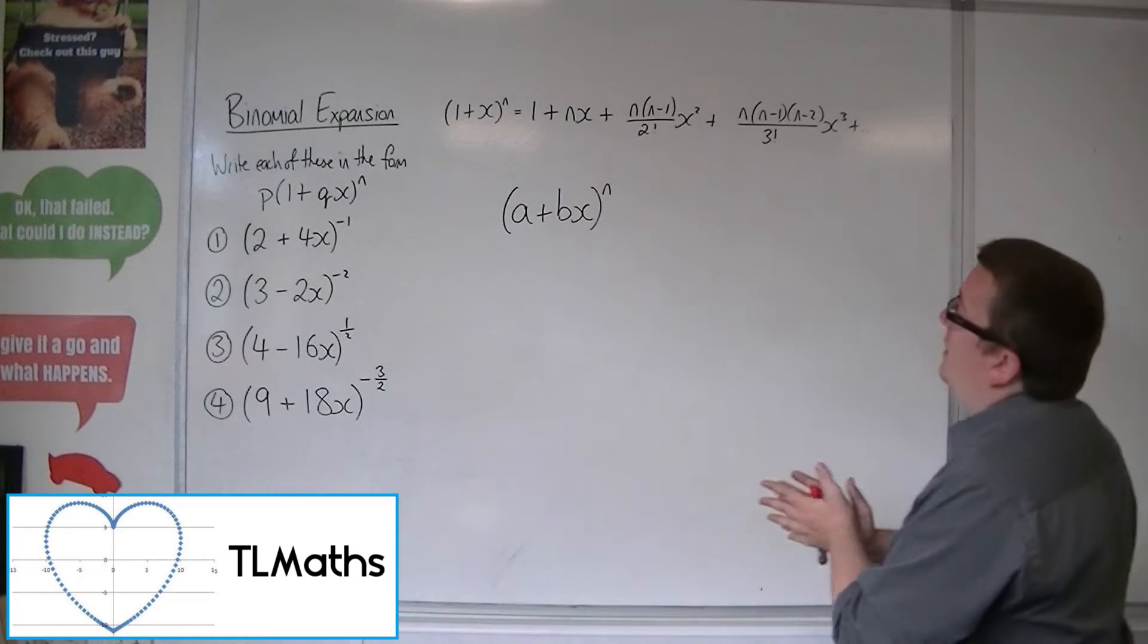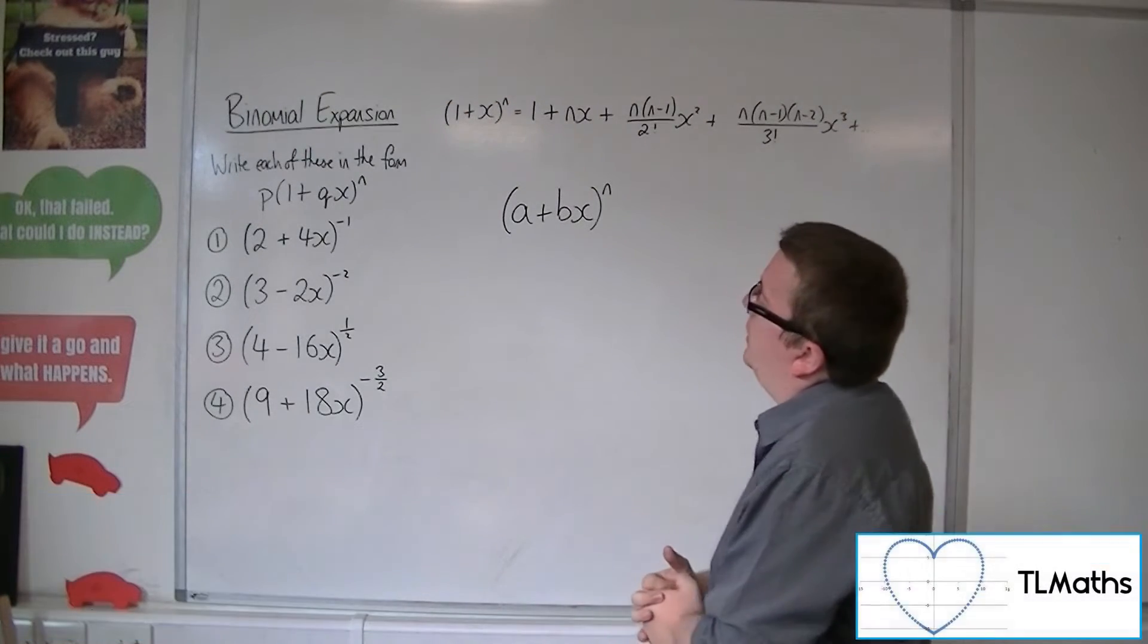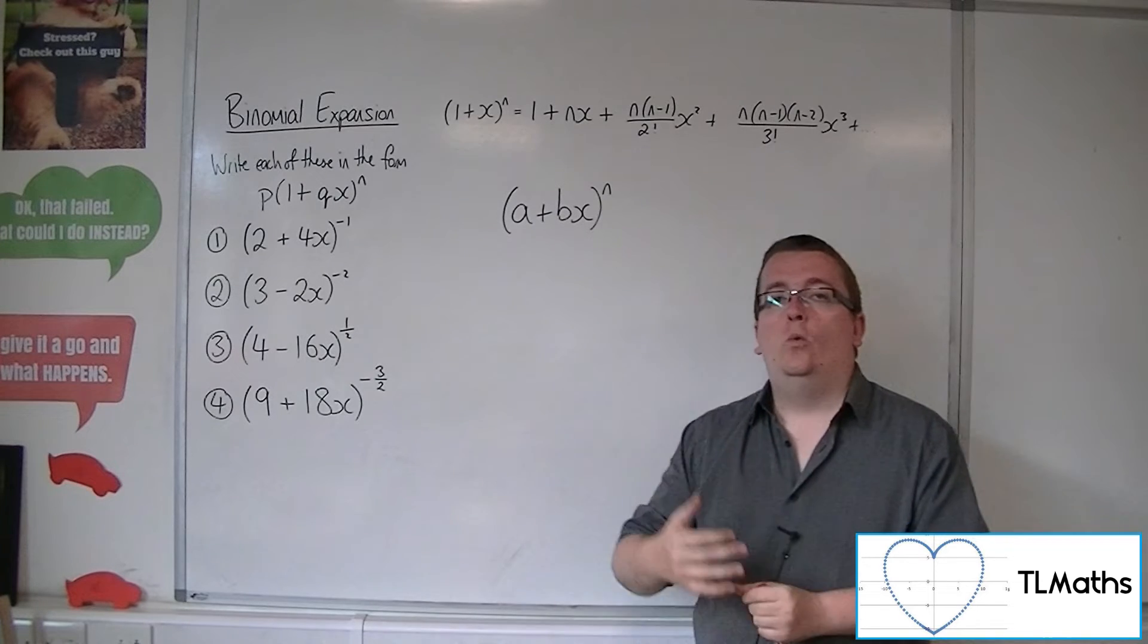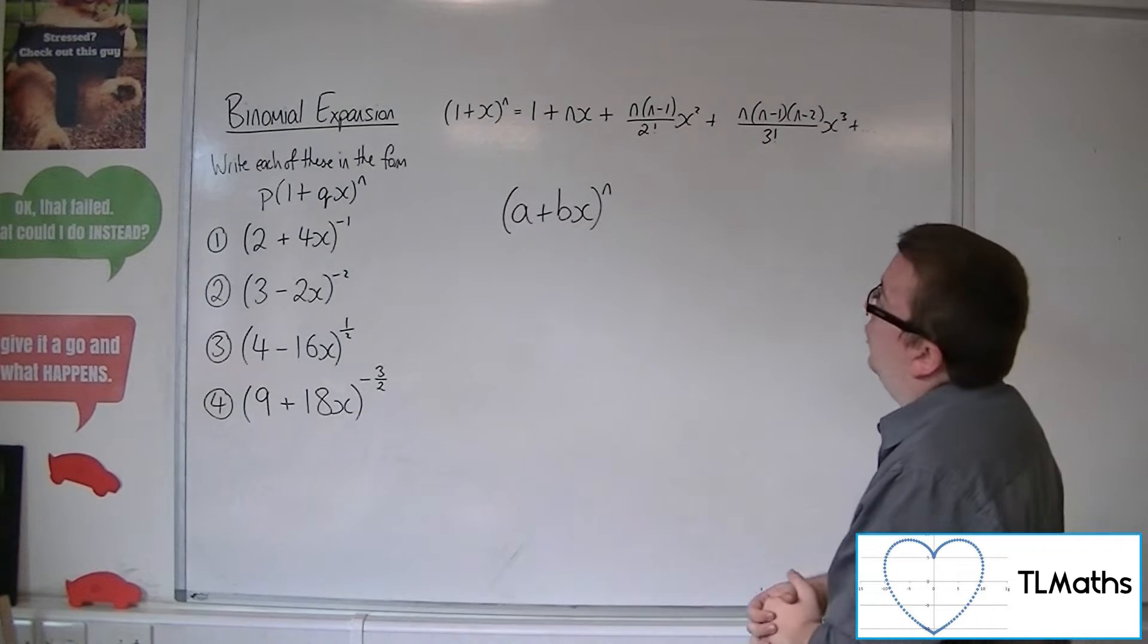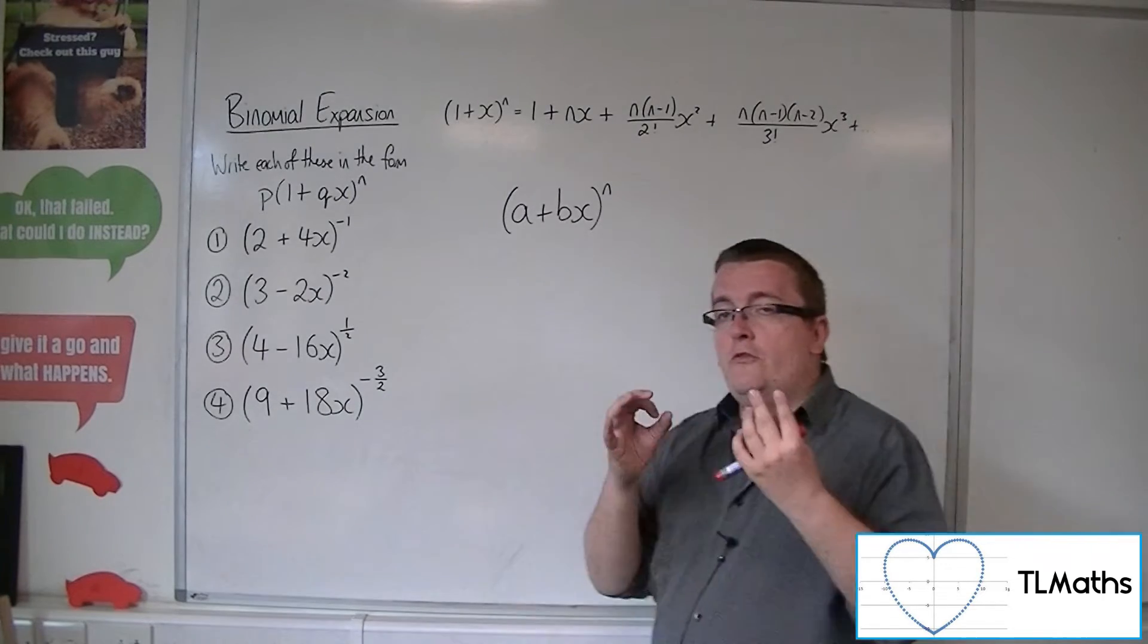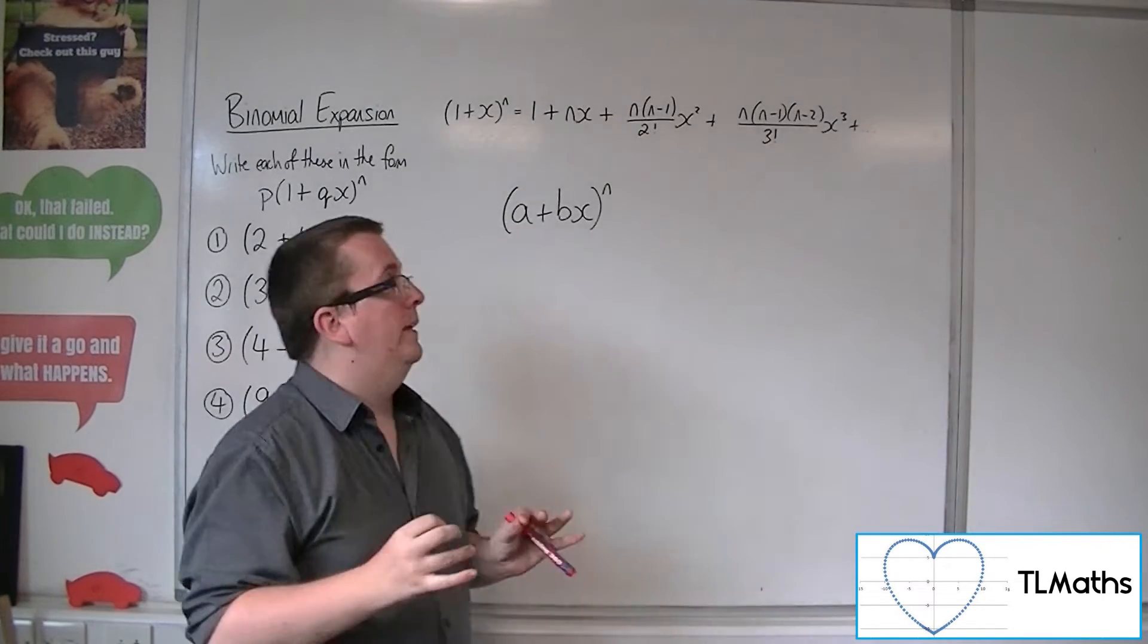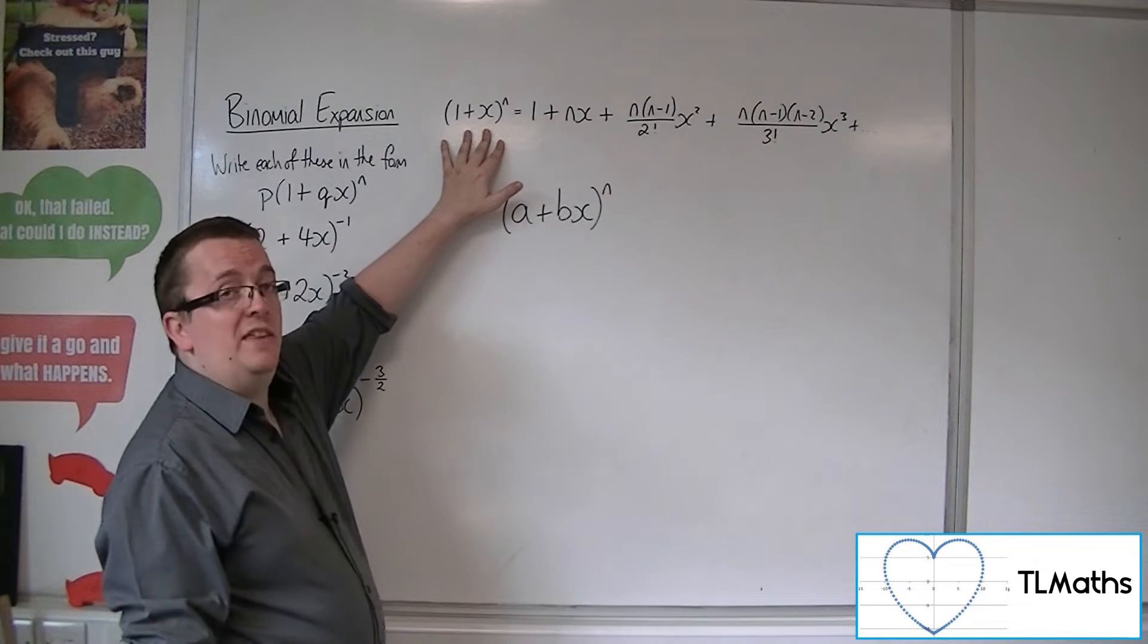OK, so we have this formula that allows us to use binomial expansion when n is not necessarily a nice whole number. And the thing about it is that it's very specific in its format because it has it as 1 plus x to the n.